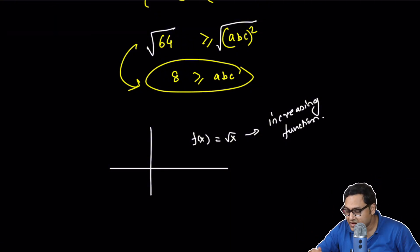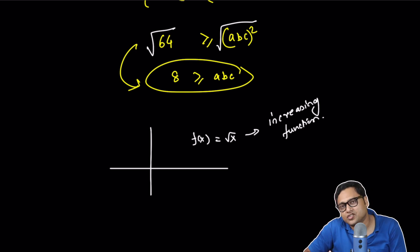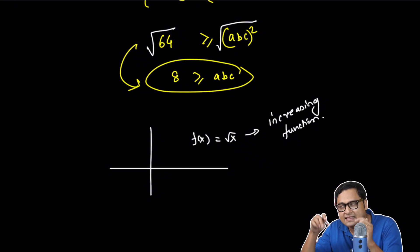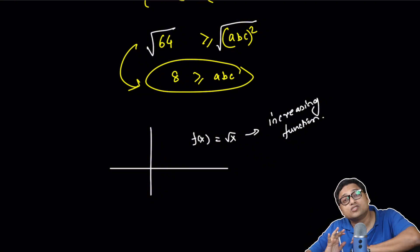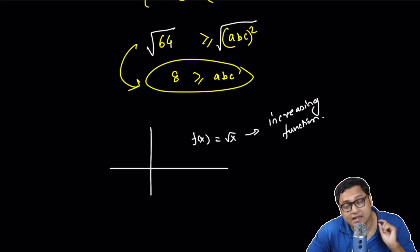An increasing function, and everything is positive. If everything is positive, if I have an increasing function, then square root of a number, if I take it on both sides, then I can preserve the inequality. This is true about all increasing functions.